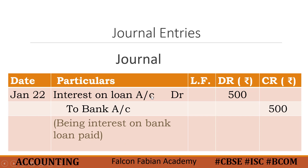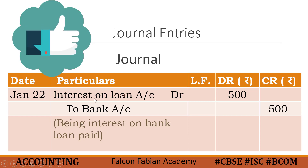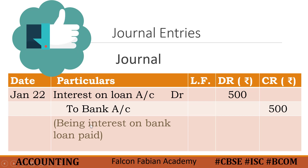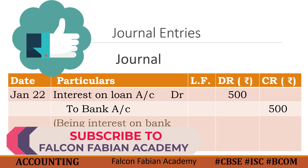So: interest on loan account debit 500, to bank account credit 500, and the narrative is being interest on bank loan paid. If you want to learn more about journal entries, click on the next video. If you found this video useful, give it a thumbs up and share it with your friends. Subscribe to our channel and press the bell button to stay notified. Till the next video, bye.